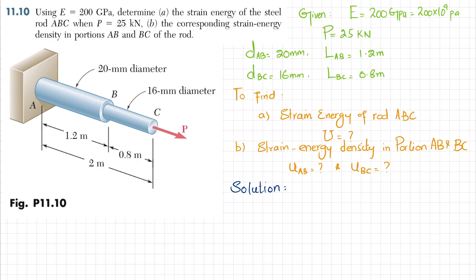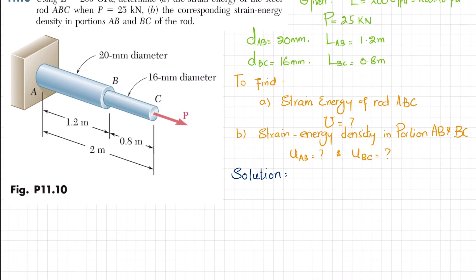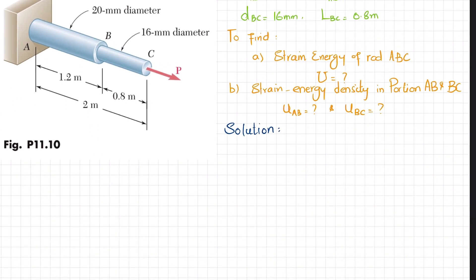I have written the given data — you can check all the data mentioned here. What we have to find is total capital U and small u_AB and u_BC, which is strain energy density. As we know, the total strain energy is equal to the sum of P² times L divided by 2EA. I have already explained this in my theory lectures — you can go and watch them.